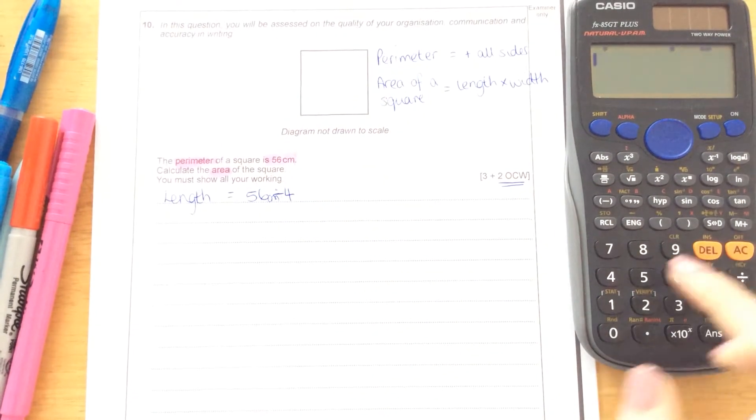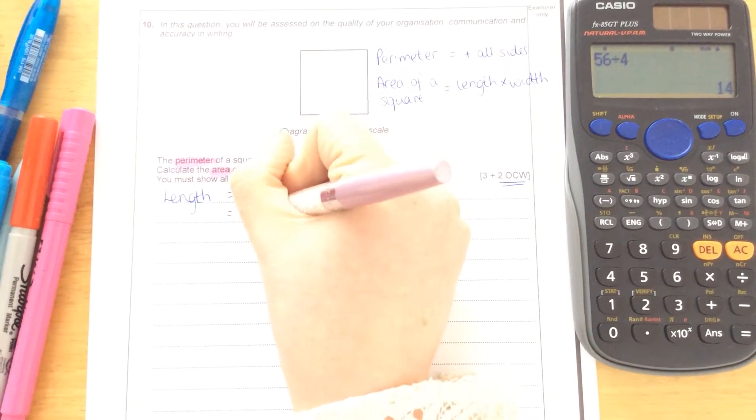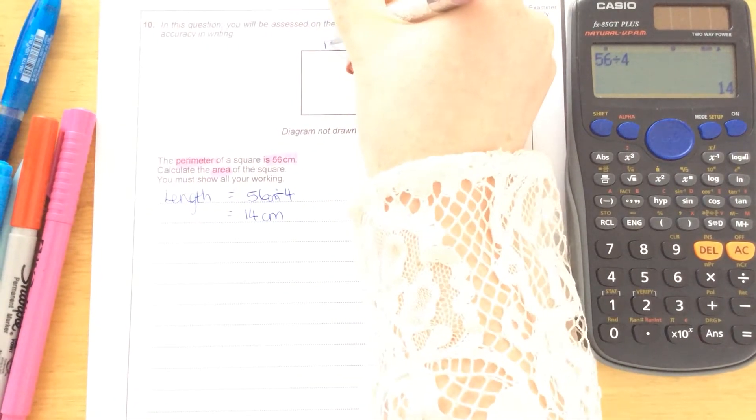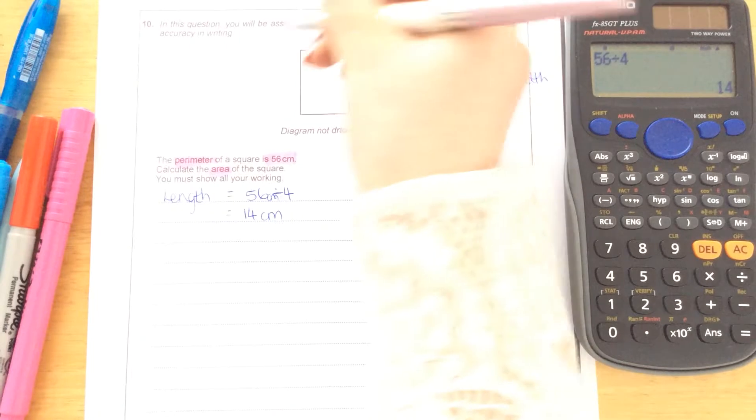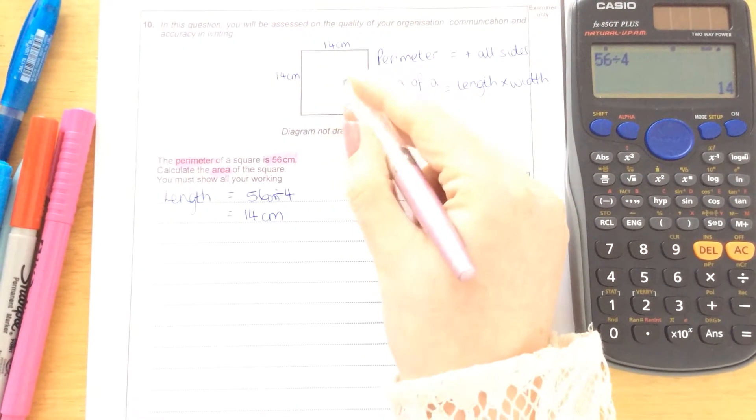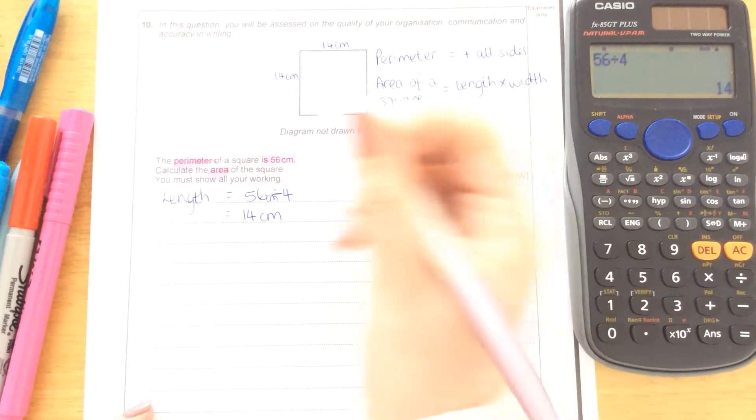And this is the calculator paper, so we can do that on here. 56 divided by 4 is 14. So that means that every one of these sides is going to be 14 centimetres. So to work out the area of the square, we just need to work out 14 times 14.